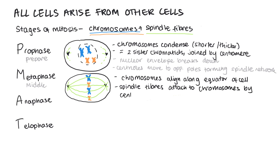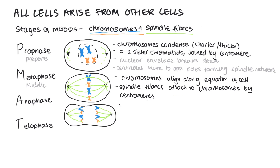In anaphase, we can think of the A as standing for apart. During anaphase, the spindle fibres contract, pulling sister chromatids to opposite poles of the cell. During this, the centromere is going to divide.